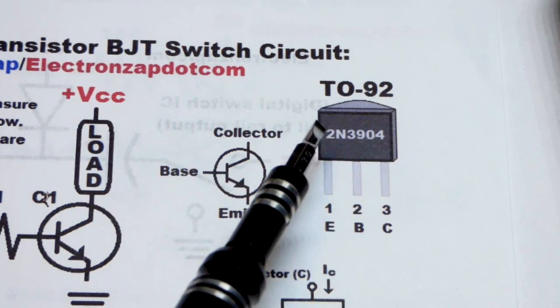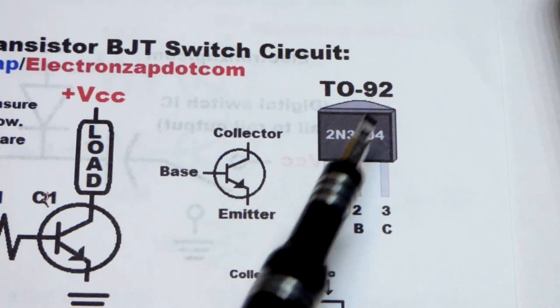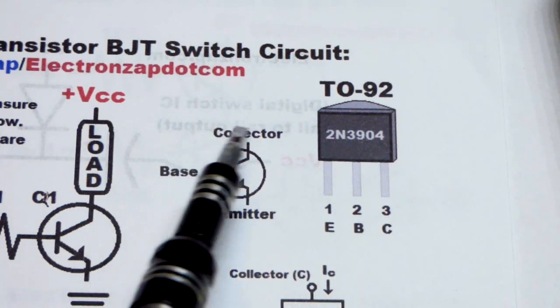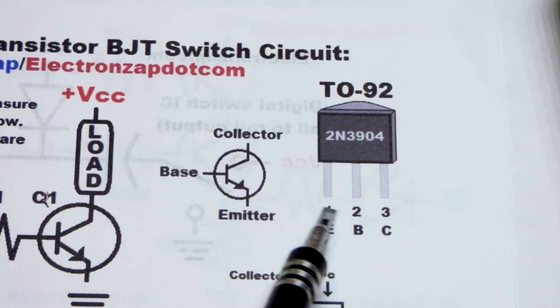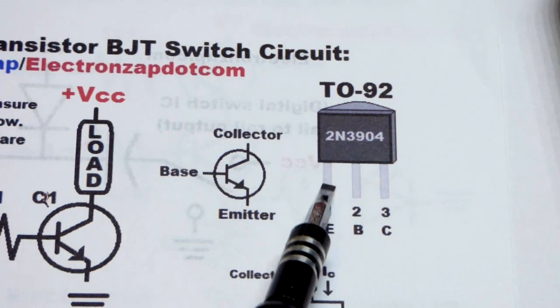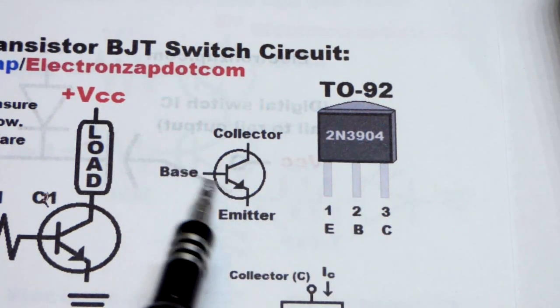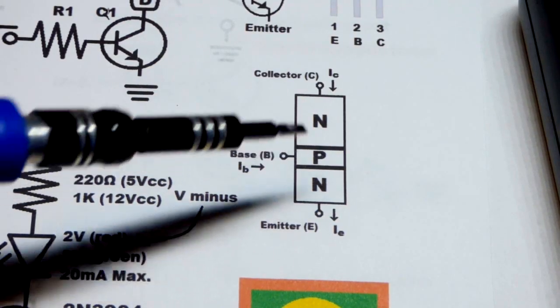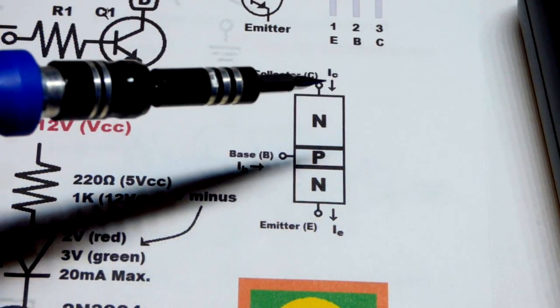So now the 2N3904 and the TO-92 package has this pin layout right here. And there is the schematic symbol with the name. So the emitter, right there is the arrow. When you're looking at the flat side, that's left pin. Base is the middle pin right there. And collector is the pin to the right. And here's the chemical makeup, really quick, right there.